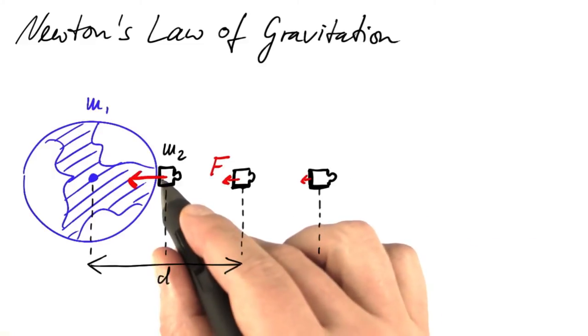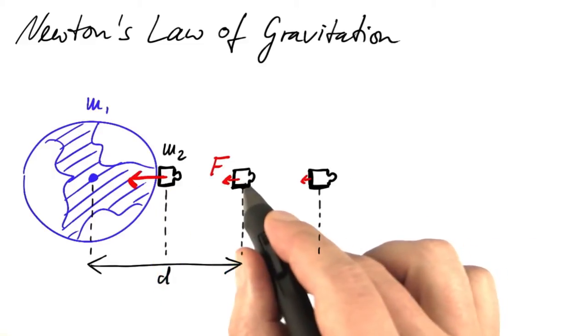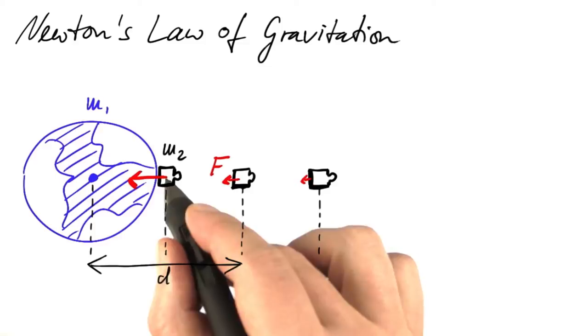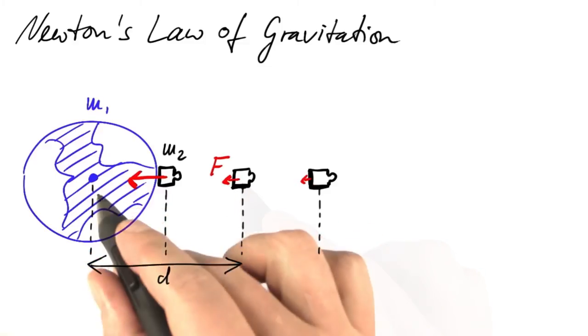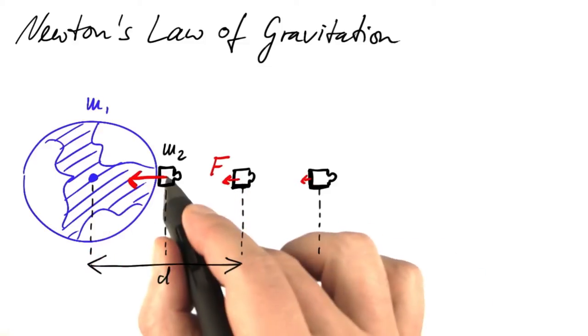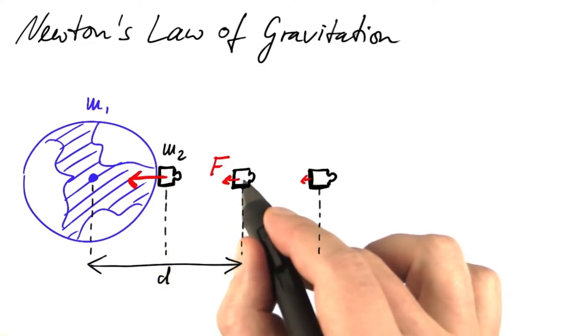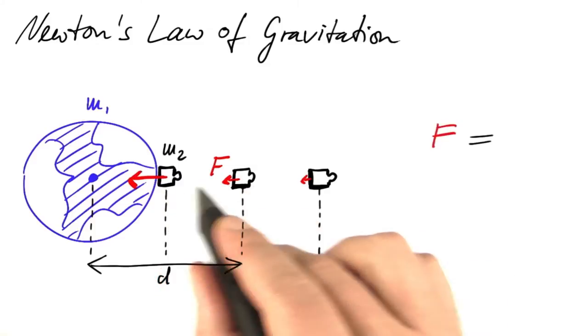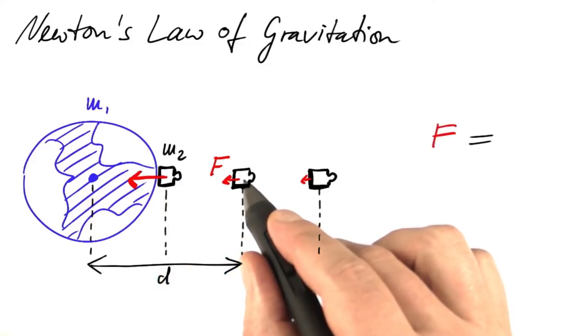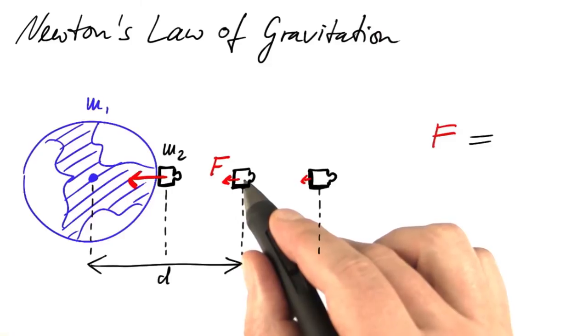What's going to happen if we double the distance between our mass and the center of the Earth? Obviously, the force is shrinking, but by which factor? It turns out that as we double the distance, we have only one-quarter of the force.